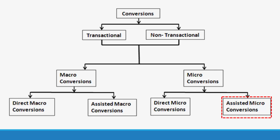For assisted micro conversions, when a user clicks on a paid search ad but later returns to your website via organic search to sign up for your newsletter, then the paid search marketing channel only helped in achieving a minor website goal — in other words, it indirectly achieved a minor website goal — and hence the conversion assisted by the paid search channel is referred to as an assisted micro conversion in Google Analytics multi-channel reports. Whether a conversion is referred to as assisted or direct depends upon the role a marketing channel played in the conversion path.